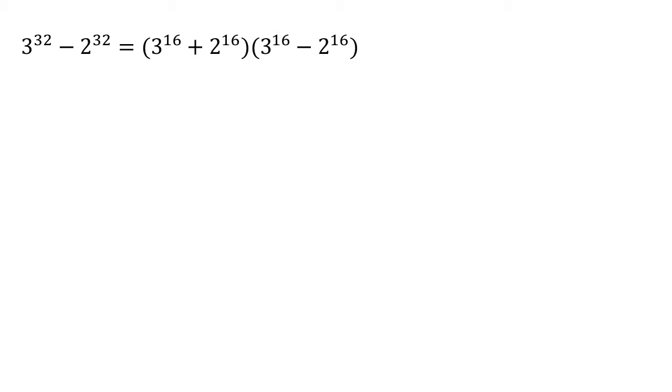But now what we're left with is on the right hand of our right hand side we've got another expression of two numbers subtracting from each other with even powers that are identical so we can do the same thing again. So our second bracket becomes 3 to the 8 plus 2 to the 8 times 3 to the 8 minus 2 to the 8.